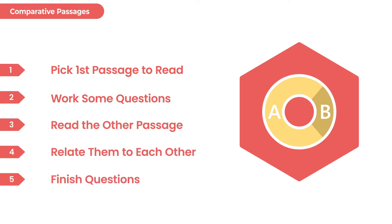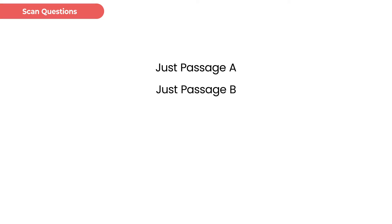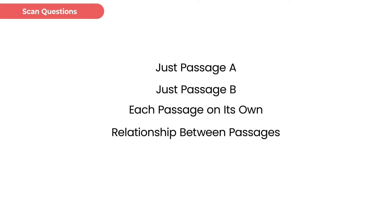So how do I pick which one I want to read first? Well, I'm looking at the questions. Some questions are just about passage A, some are just about passage B, some are asking which is true in each of these. And then some are asking what's the relationship between the two. If a question's asking just about A or just about B, and we've read that passage, we can go ahead and pick our answer — we don't need to read the other one.